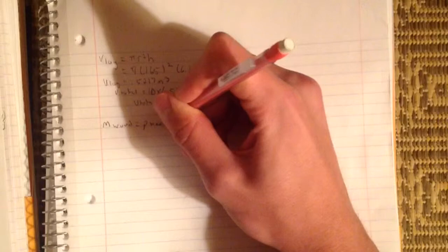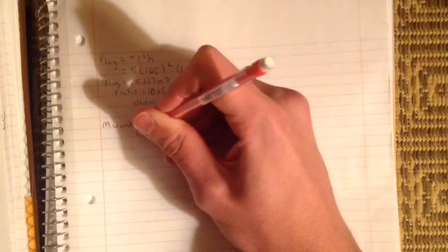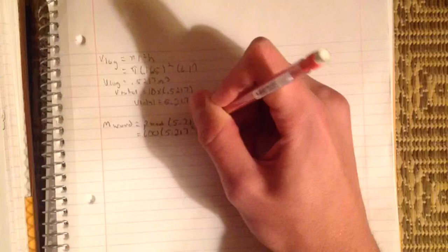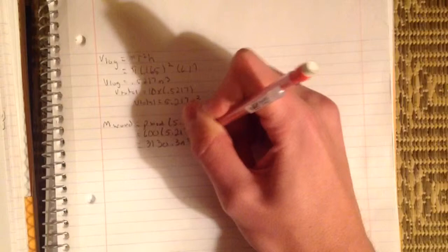Next we are going to find the mass of the wood. We do that by multiplying rho wood, which is the density, times the volume of the wood. The mass of the wood equals 600, which is the density, multiplied by the volume of the logs which is 5.217 meters cubed. The total is 3,130.39 kilograms.